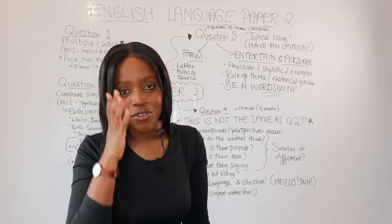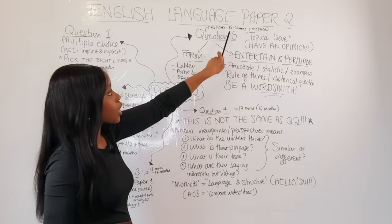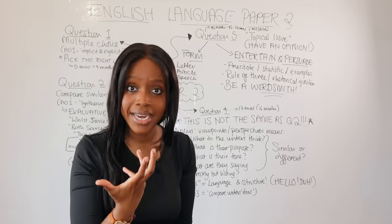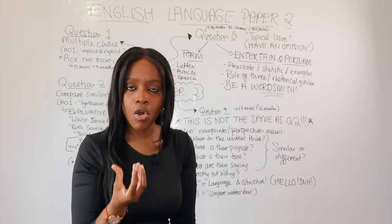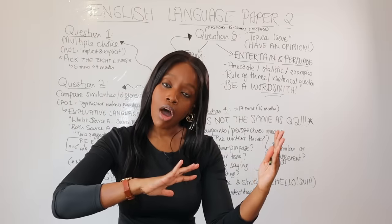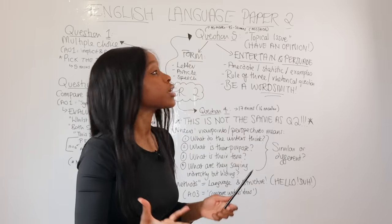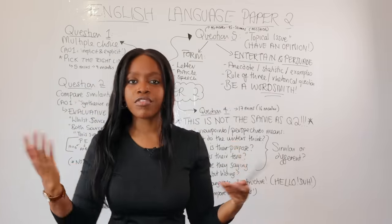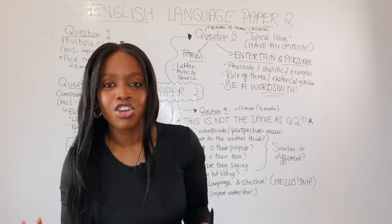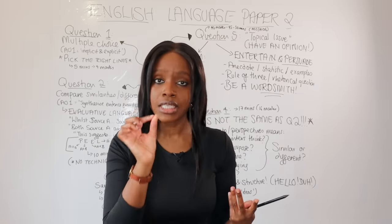For question five — the final question, worth half the paper's overall marks at 40 marks — spend a minimum of 45 to 50 minutes. Spend the first 10 minutes of that time planning your response. Question five tests your ability to write persuasively and have an opinion on topical issues — things that are generally debated in society, such as whether education is worth it, whether social media and technology is good or bad for us, or whether parents are too overprotective.